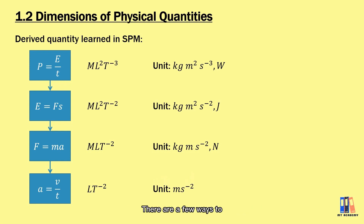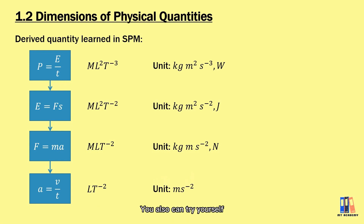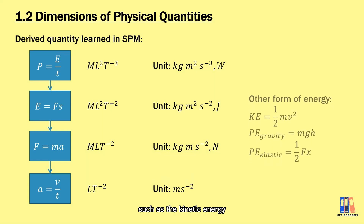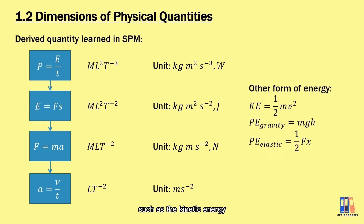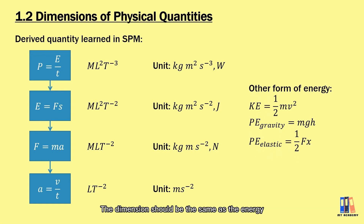There are several ways to identify units or dimensions of a derived quantity. You can also try to identify the dimension of other forms of energy, such as kinetic energy, gravitational potential energy, and elastic potential energy learned in SPM. Their dimensions should all be the same as the energy we derived: ML²/T².